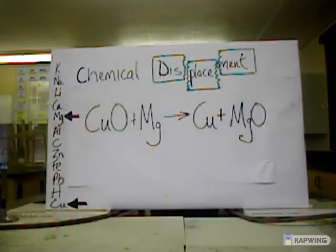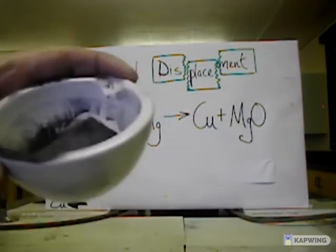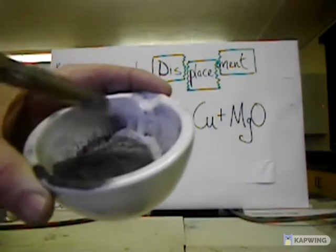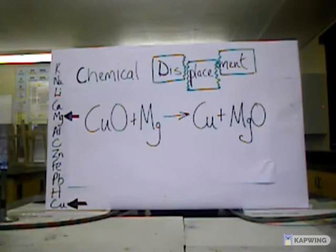And using the pestle then, I have ground this to produce a blended mixture of the two chemicals you see on the board, copper oxide and magnesium.